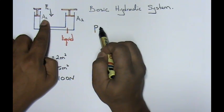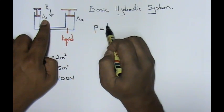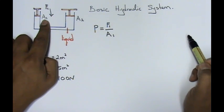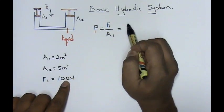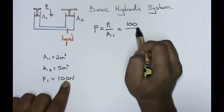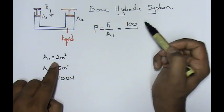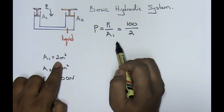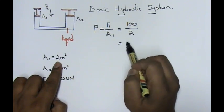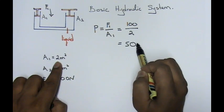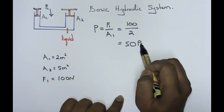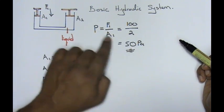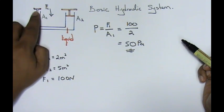First, to calculate pressure. What happens over here is I want to calculate the pressure at A1. The pressure at A1 is going to give me as force 1 over area 1. Force is given to you as 100, the area is given to you as 2. The moment you take 100 divided by 2, you will have 50, and pressure, the unit will be Pascal. 50 Pascal for this small piston that you have.